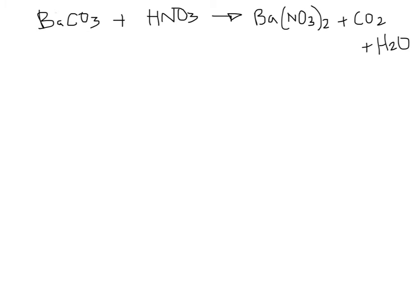All right, so number six: in the reaction barium carbonate and nitric acid, barium nitrate, carbon dioxide, and water are produced. First of all, is this thing balanced? Nope. This should be an easy one to balance. So it should be a two in front of nitric acid, right? That looks right, we're going to go with that. What mass of barium nitrate can be formed? Is that a given or a question? That's the question.